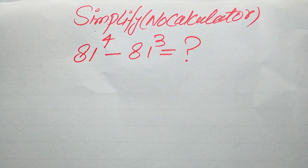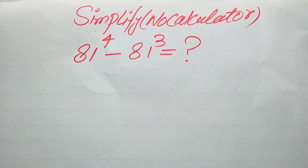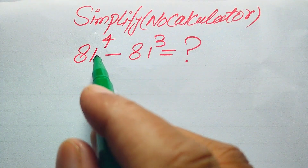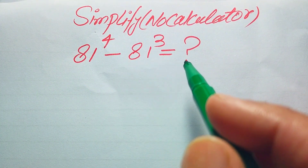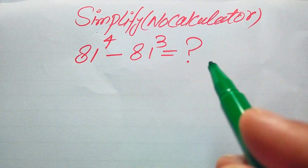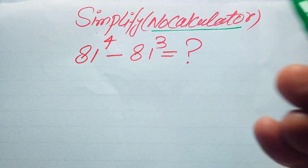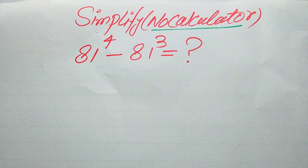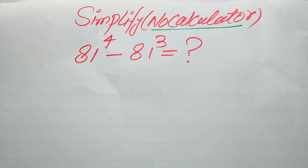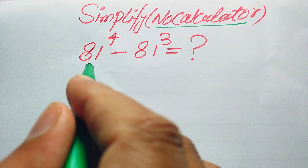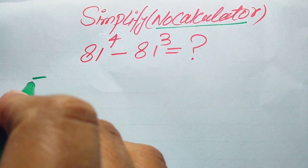Hello everyone. How to simplify this nice algebraic expression without using the calculator: 81 to the power of 4 minus 81 to the power of 3. We will write this in simplified form, but remember that the calculator is not allowed, which means we need to show all of the working on paper.